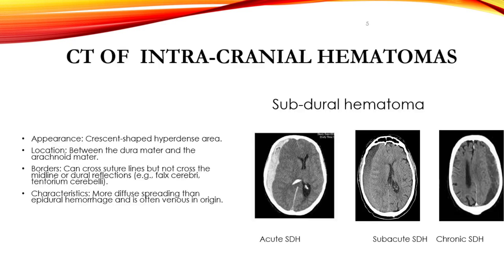A subdural hematoma occurs usually due to venous bleeding as a result of trauma incurred on the brain. It is a crescent-shaped hematoma found between the dura and the brain. It could be acute, occurring within three days of injury. Acute subdural hematoma appears as a hyperdense crescentic collection. If the bleeding occurs within three to 21 days, it appears as an isodense collection with the same density as the brain. The hematoma appears hypodense, or darker than normal brain, when it progressively develops after 21 days.